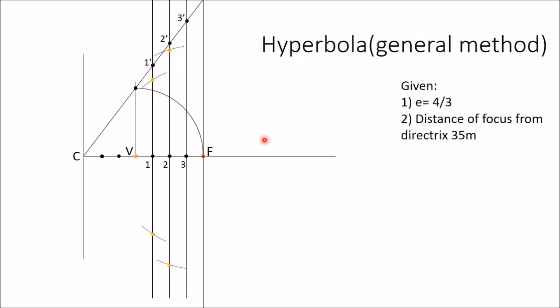Similarly, for 3-3' length with F as center, draw two arcs. When you are getting almost near to 3', you get one point here and at the bottom also you get one point. These two points are marked.